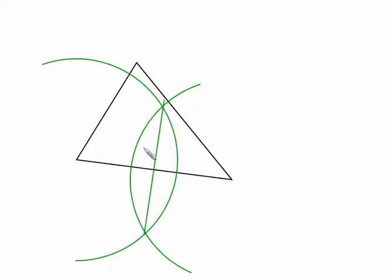But we really don't want that line. We want the median. The median goes from that midpoint to the opposite vertex. So when we draw our median, the median goes from that midpoint to the opposite vertex.